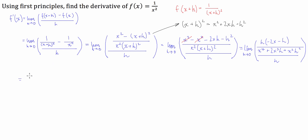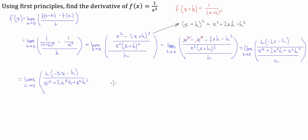We can rewrite this as the limit as h approaches zero of h times negative 2x minus h, all divided by x to the 4 plus 2x cubed h plus x squared h squared. Dividing by h is like multiplying by one over h, so we can cancel the h on the top with the h on the bottom. Notice there's an h on the top and an h on the bottom, so they cancel.